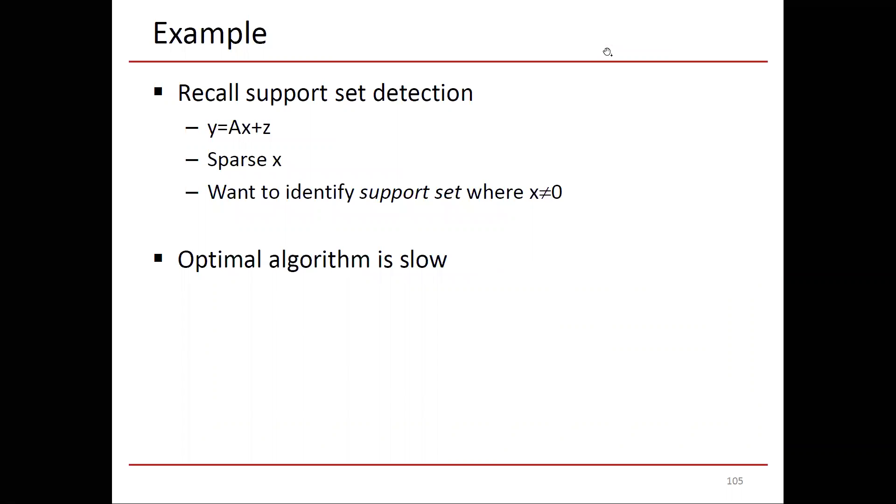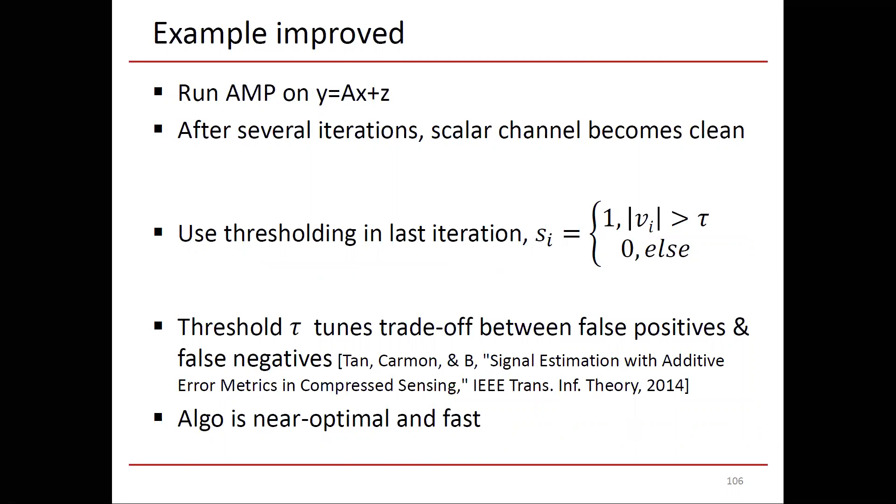Here's an example. Recall that we've discussed support detection in the past. y equals ax plus z, and suppose that x is sparse, and we want to identify the support set of locations where x is non-zero, and we discussed that an optimal algorithm is very slow, combinatorially slow. So here's an improved approach. Run AMP on this problem, y equals ax plus z. After several iterations, you've cleaned up the scalar channel. Maybe it's not as clean as it can get with another 20 iterations, but you've cleaned it up reasonably.